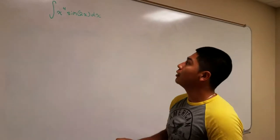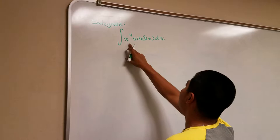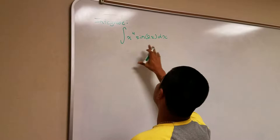The next problem we have is to integrate this function: the integral of x to the fourth times sine of 2x dx. This is an infinite integral, so it keeps on oscillating.